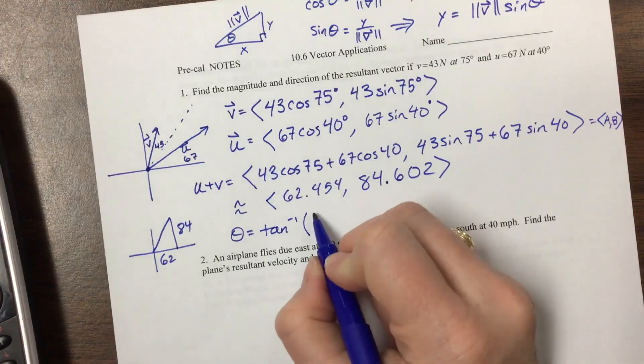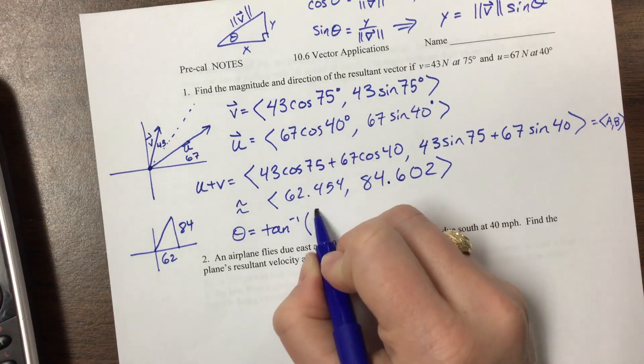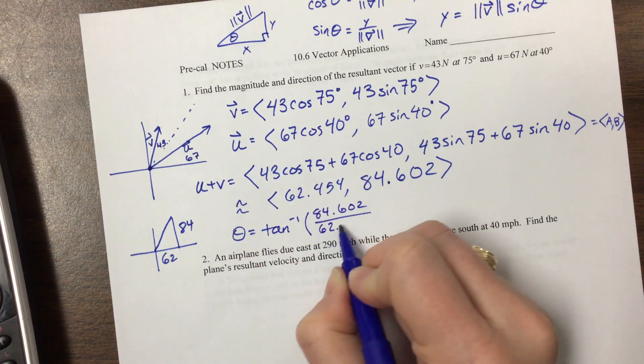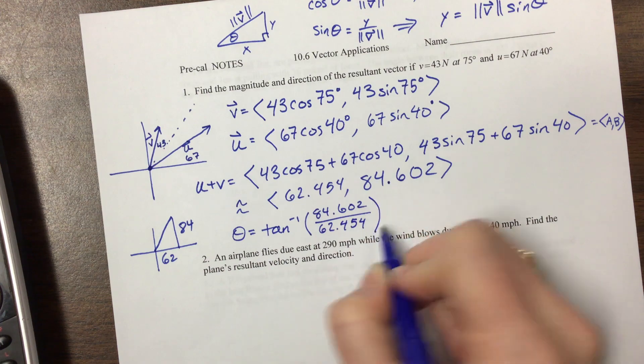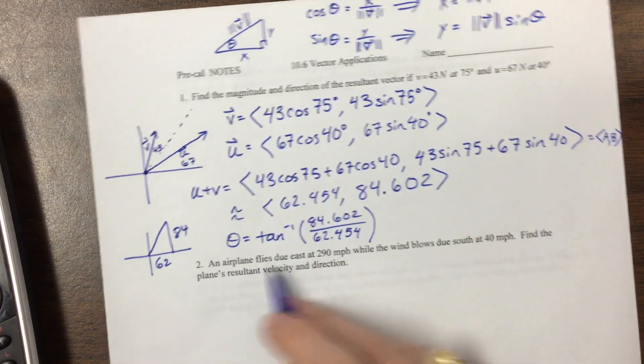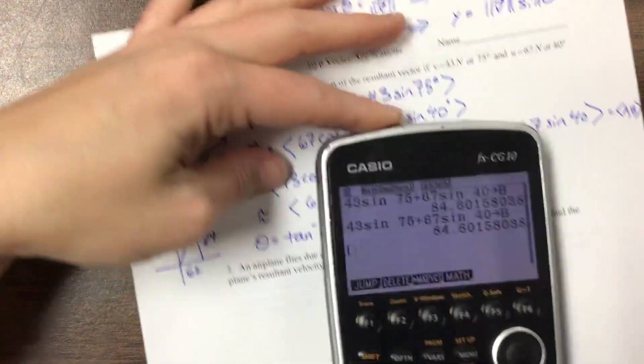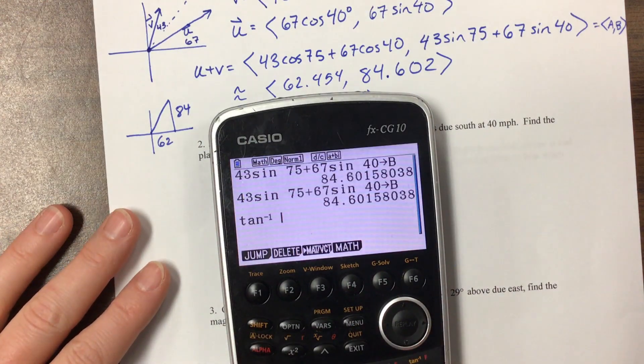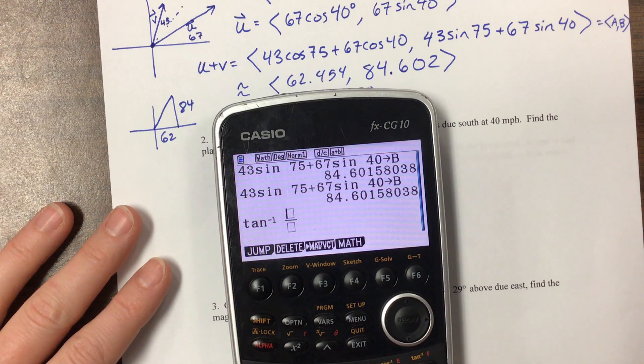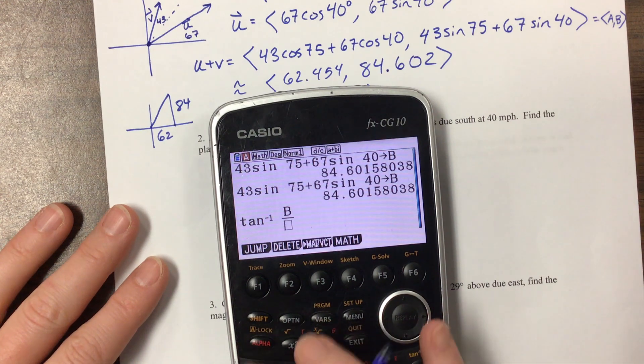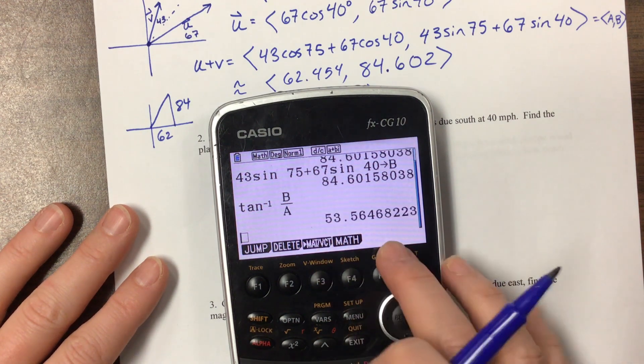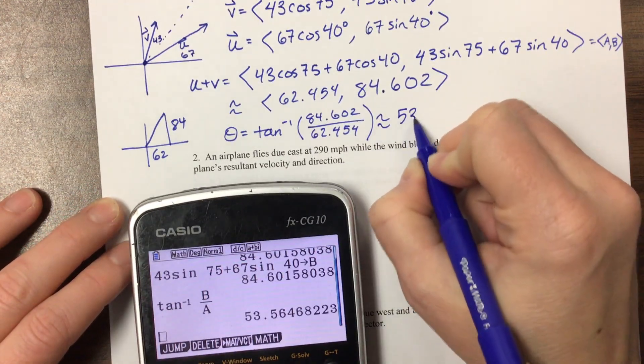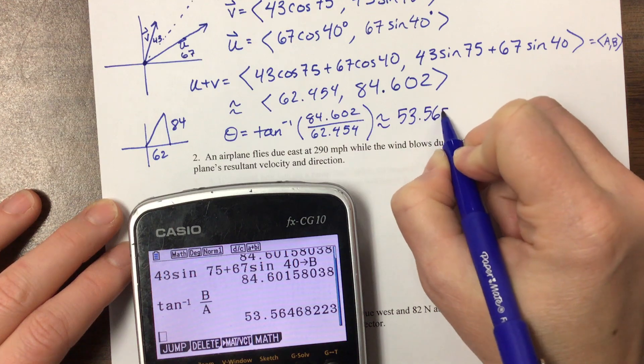So Y, we saved that as B. So in my calculator, or I could say, okay, this is 84.602 divided by this, 62.454. And that would tell us what. So let's do both really fast. I'm going to say inverse tangent of B over A, because I'm too lazy to type it in. That gives me about, so theta is about 53.565 degrees.